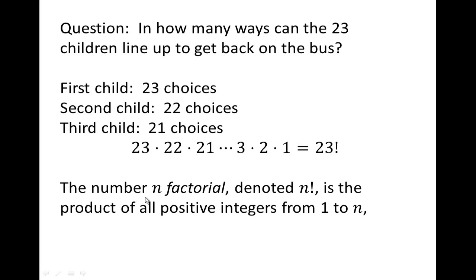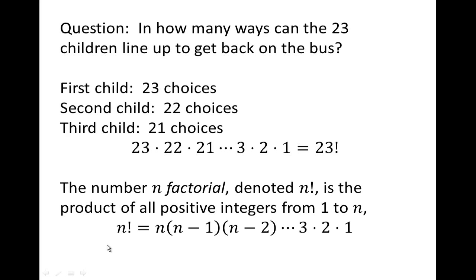We introduce notation for this product: we write 23 × 22 × 21 × ⋯ × 1 as '23!' — read as '23 factorial.' In general, n factorial (written n!) is the product of all positive integers from 1 to n, expressed as n × (n−1) × (n−2) × ⋯ × 3 × 2 × 1. By convention, 0! is defined to be 1. Exponential expressions and factorials are things that commonly occur in these counting types of problems.